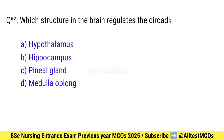Question number 62. Which structure in the brain regulates the circadian rhythm? Right option is C: Pineal gland.